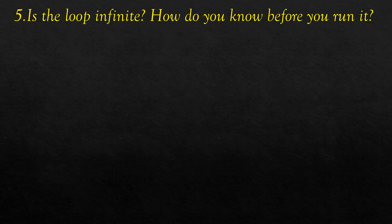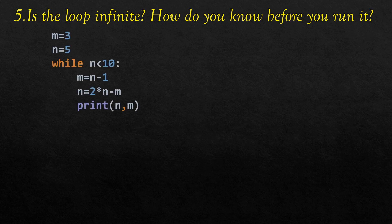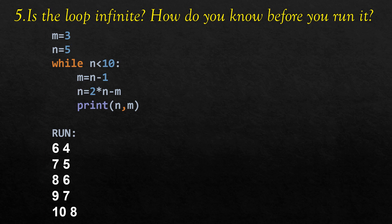The question asks whether this loop is infinite. m=3, n=5, while n < 10: m = n - 1 and n = 2*n - m. First iteration: m becomes 4, n becomes 2*5 - 4 = 6. Then 7 and 5, 8 and 6, 9 and 7, and finally n becomes 10. Since n reaches 10, the condition n < 10 fails and the loop terminates — it is not infinite.